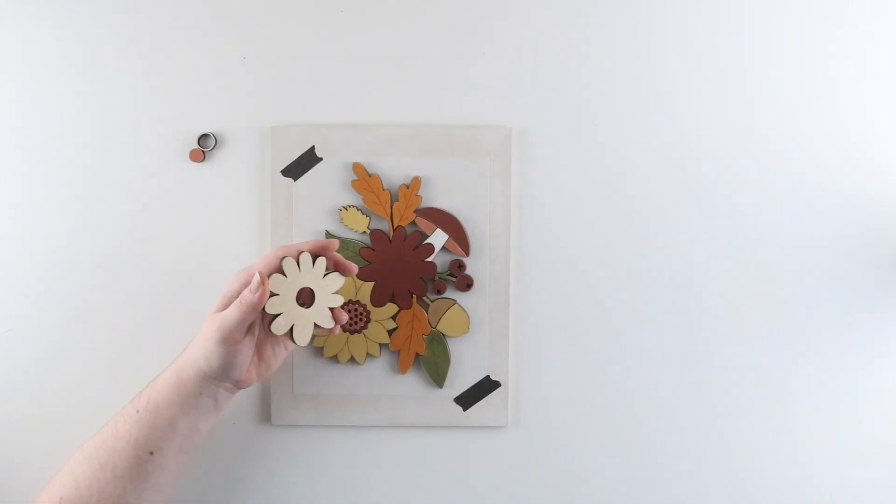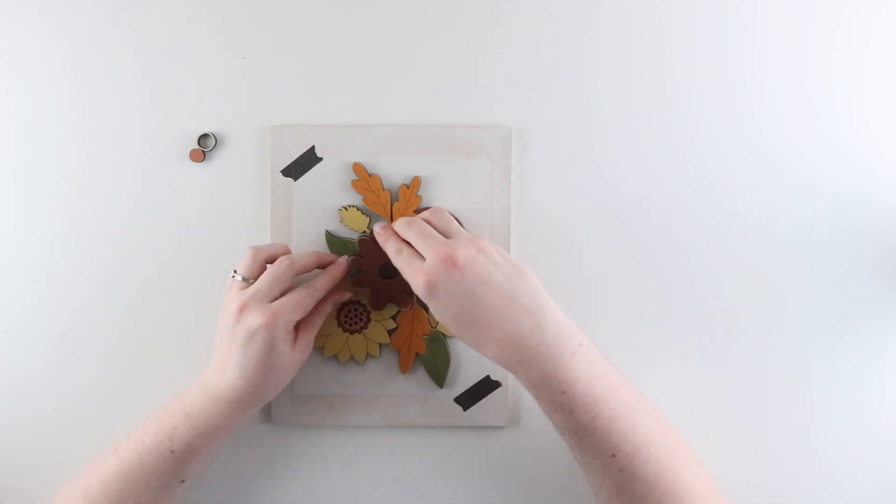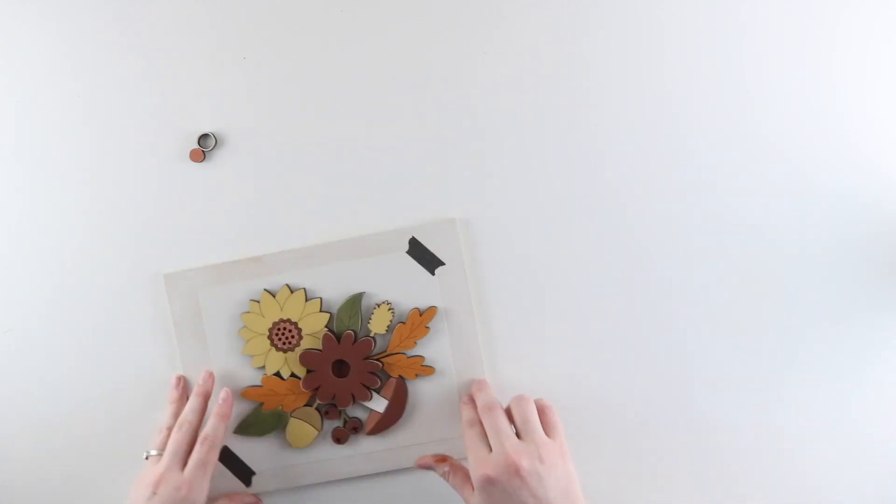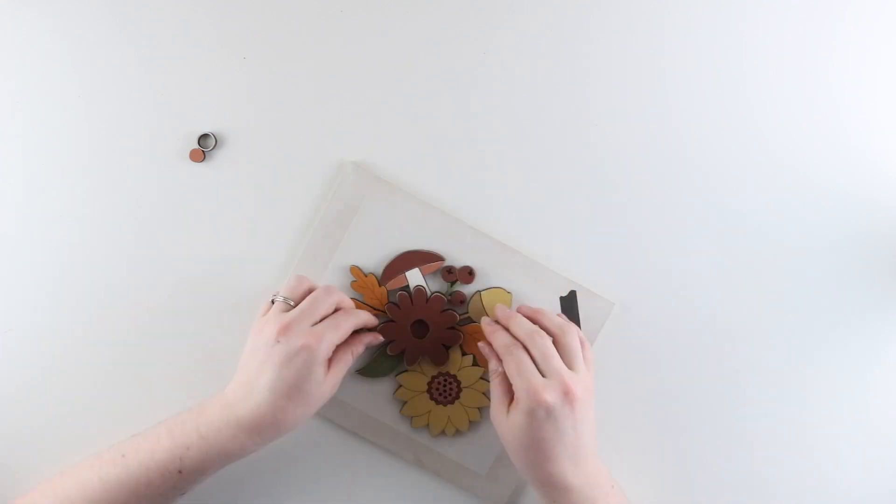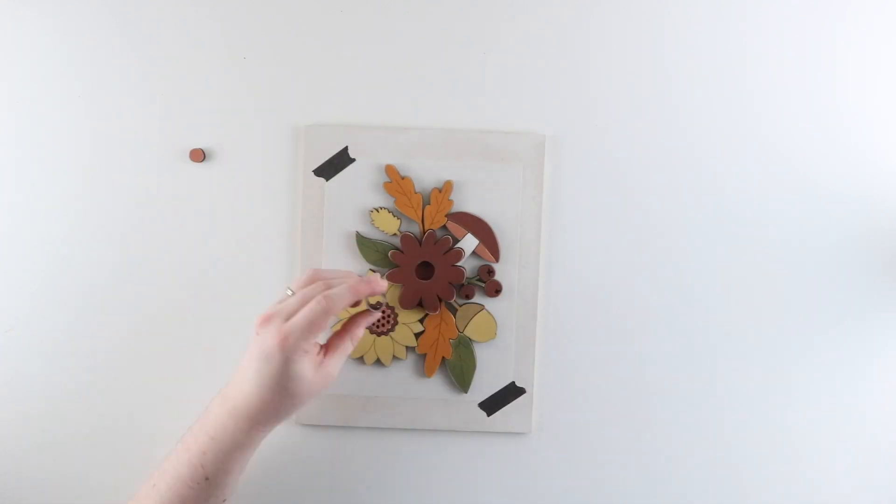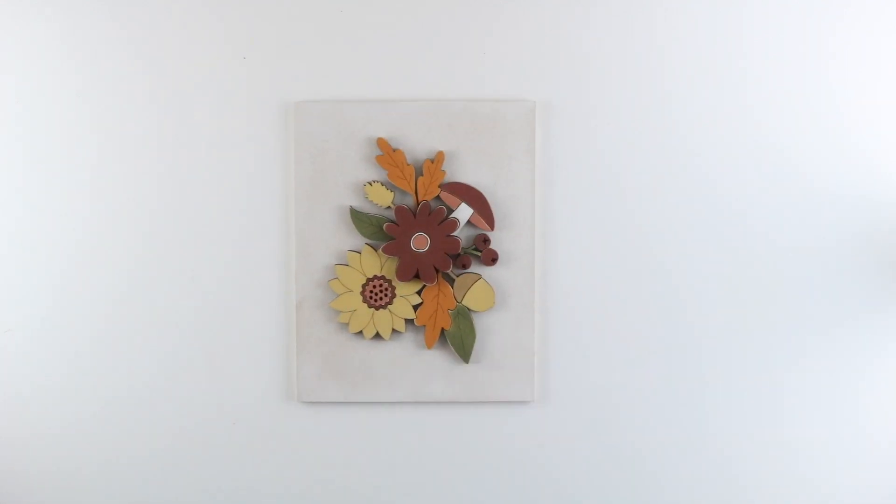Then I'm going to place the large flower with the hole cut out, making sure that the petals all line up perfectly. You shouldn't have to force any pieces together. If it's not fitting quite right try rotating it and trying again. Once everything is placed you can remove the template.